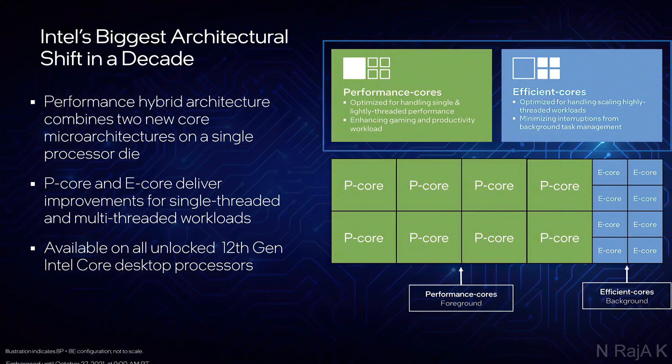For example, in gaming, the Performance Cores handle the main game performance, while the Efficient Cores handle background recording tasks. So there are two types of cores working together — the Performance Cores focus on gaming, and the Efficient Cores handle background workloads.